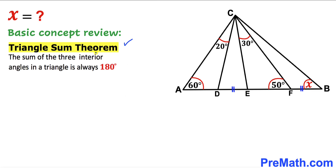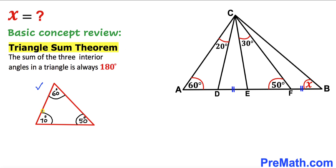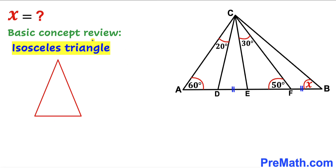Now let's review the triangle sum theorem: the sum of the three interior angles in a triangle is always 180 degrees. For example, if two angles are 70 and 60 degrees, the third is 50 degrees. Finally, in an isosceles triangle, two sides are congruent and the angles opposite those sides are also congruent.